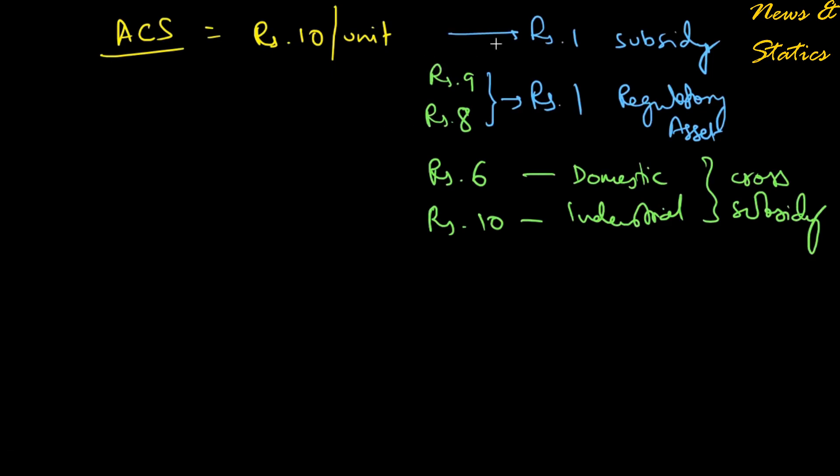This rupee 1 subsidy by the state government to the DISCOMs is oftentimes pending for a large period of time. The regulatory asset that the DISCOM has to realize from customers later also keeps pending. Domestic consumers also default and don't pay money in time. During the COVID-19 pandemic, many industrial establishments shut down or went to alternate day arrangements, so the overall demand of electricity from the industrial sector plummeted.